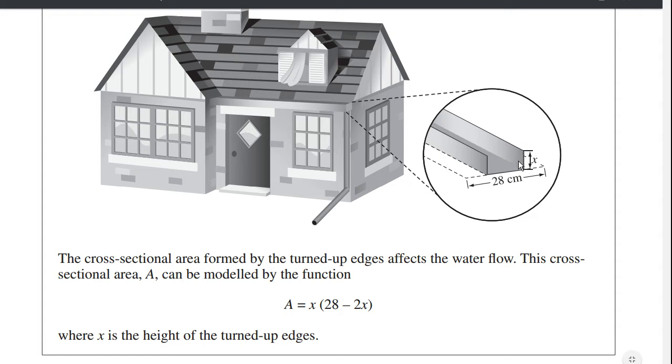So the taller that we make this cross section, the skinnier it's going to be at the base. The base is 28 centimeters minus 2x and then the height is just x. So the area of this is obviously going to be x times 28 minus 2x.